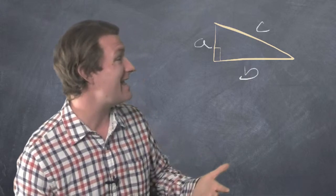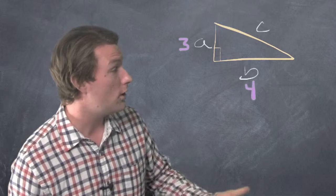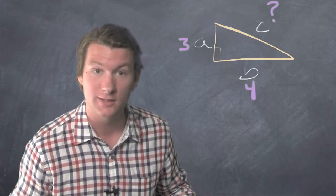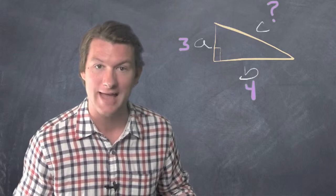Let's say that A is 3 and B is 4, and we don't know the hypotenuse. We're trying to find C. So let's put this Pythagorean Theorem into action.